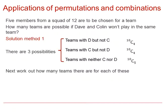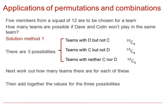Similarly, for teams with Colin but not Dave. Where you have a team that's going to have neither Colin nor Dave, you have reduced the squad you're choosing from to ten, and you're going to make five choices from that. The solution is then found by adding together the values of these three possibilities, and you will find that it totals 672.